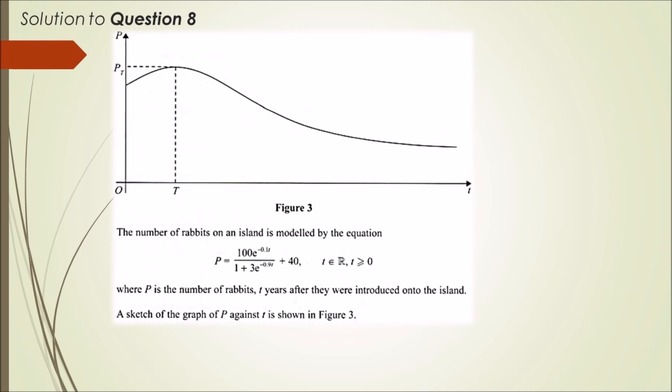The statement says the number of rabbits on an island is modeled by the following equation. We see the equation has exponentials and negative exponential powers, and this is all for t greater than or equal to zero, so we assume this is time. It says where P is the number of rabbits, t years after they were introduced onto the island.